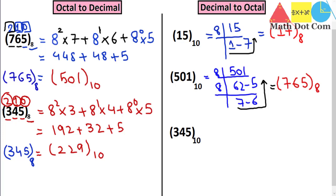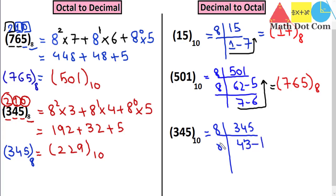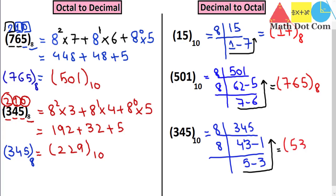For the last example, decimal 345: we do repeated division by 8. 8 fours are 32, remainder 25; 8 threes are 24, remainder 1; then 8 fives are 40, remainder 3. We stop the division here. Writing the remainders gives us 531 — the octal equivalent of decimal 345.